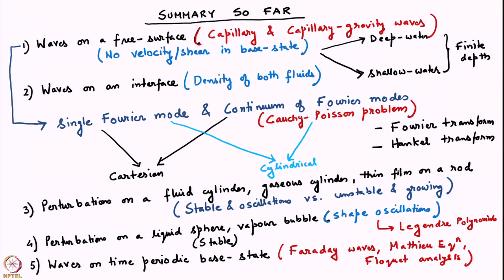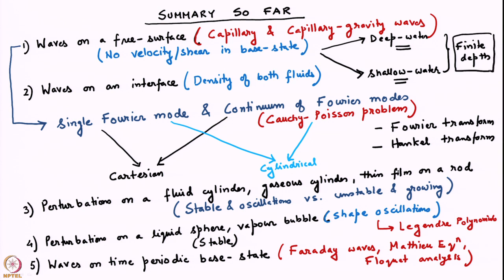We started with waves on a free surface — where the density of the upper fluid was neglected and, if surface tension was also neglected, pressure was set to zero at the free surface. We looked at capillary waves and capillary-gravity waves; the important feature was no velocity in the base state. We examined the deep water and shallow water approximations and found the dispersion relation in both limits as well as for finite depth. The deep water limit is where the depth is much greater than the wavelength; the shallow water (long wave) limit is the opposite.